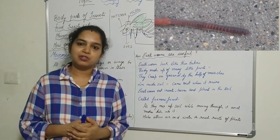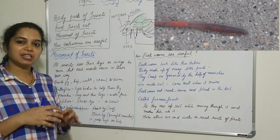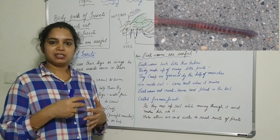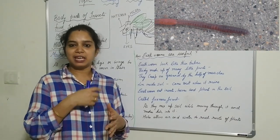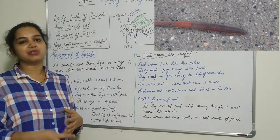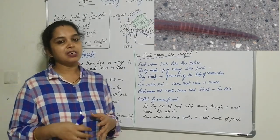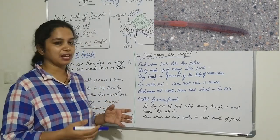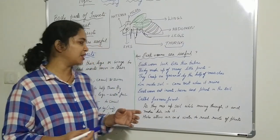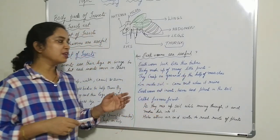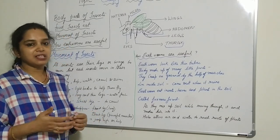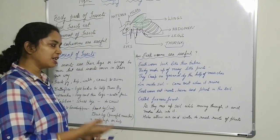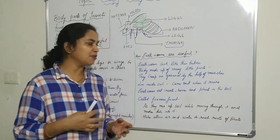You might have seen the earthworm — it is also called the farmer's friend. Earthworms live inside the soil and turn the soil up and down, creating small pores so that air and water can reach the roots of plants. The earthworm's body is not divided into head, thorax, and abdomen like other insects. It has a tube-like body made up of many small segments.